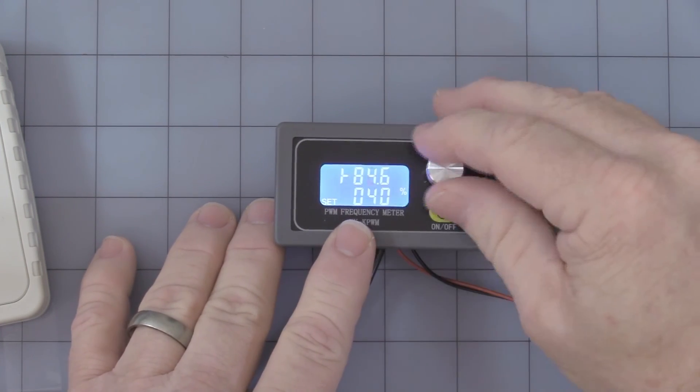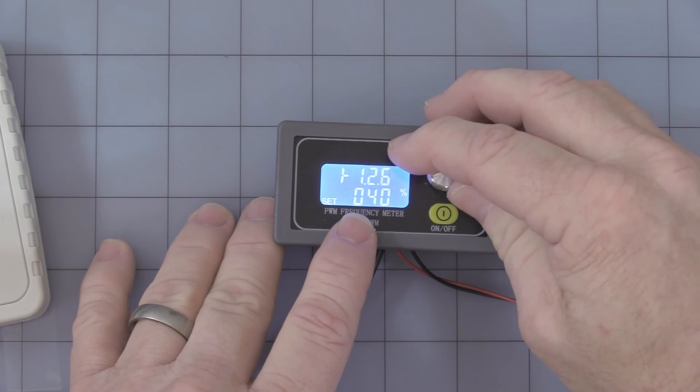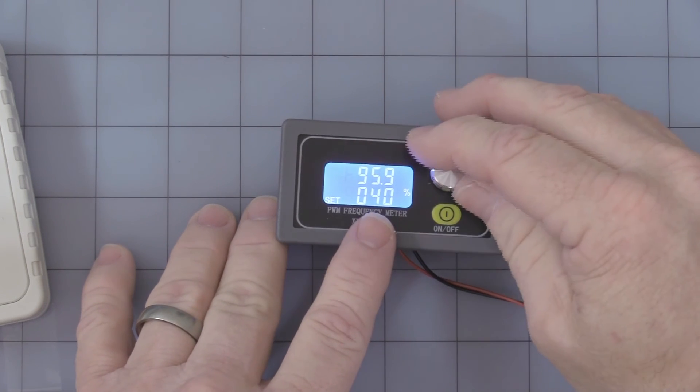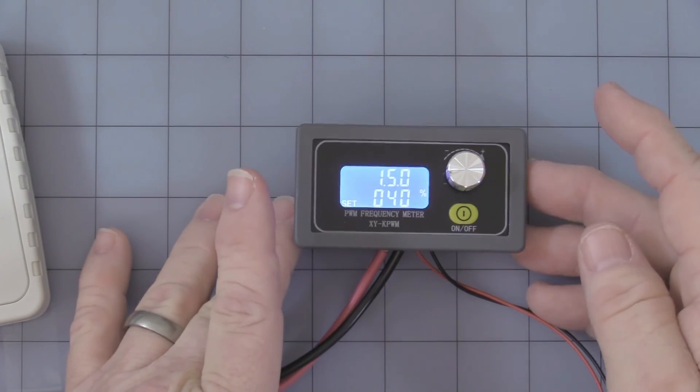I guess that's one drawback—it does take a while to dial it up. Okay, and once you get above into the 100 kilohertz range, you can see it adds the extra decimal point. And you get up to the maximum of 150 kilohertz.